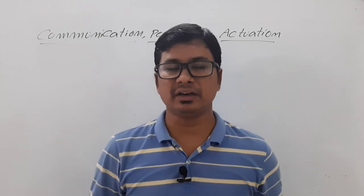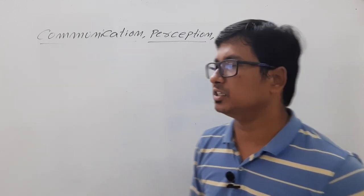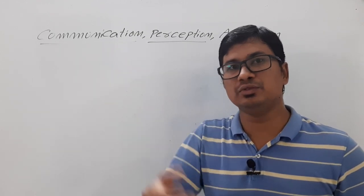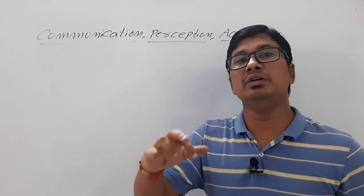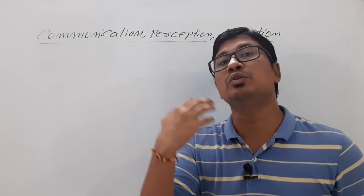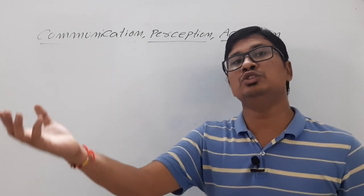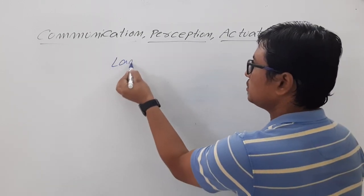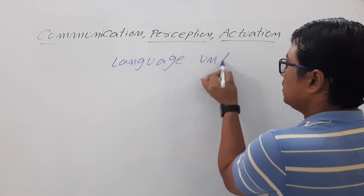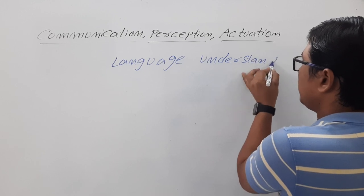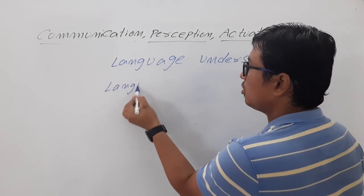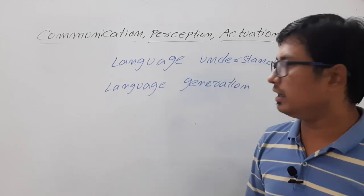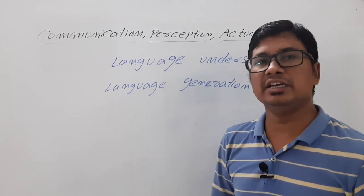First, let me discuss communication. If you want to design an agent to communicate with a human, the agent should do two things: it has to understand what the human is speaking, and then it should send a reply. So the agent needs to understand the language and also generate the language. This involves two tasks: language understanding and language generation.